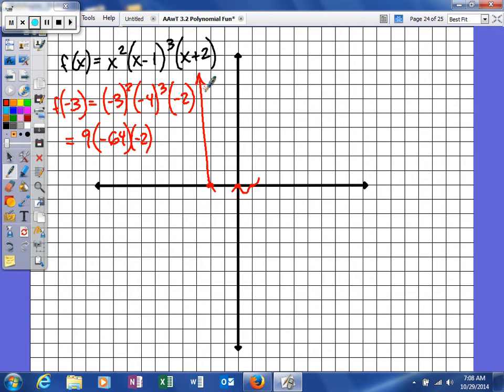So let's go ahead and plug in negative 1 now and just make sure that if it's on the graph, we'll show that it's on the graph. So this will be negative 1 squared, this will be negative 2 cubed, and then this will be a positive 1. So when you square that, you'll get 1, this will give us negative 8, and then times 1. So we'll be at negative 8.